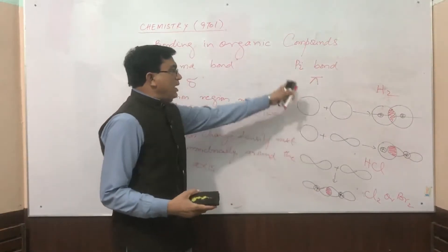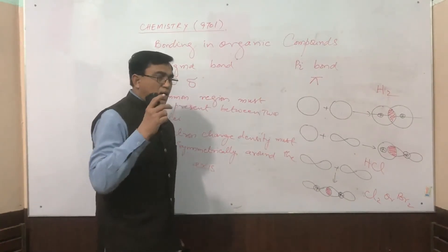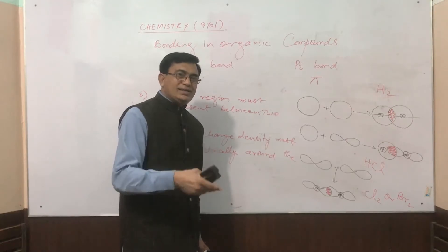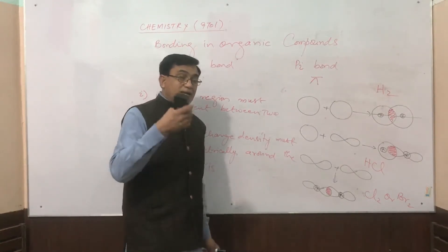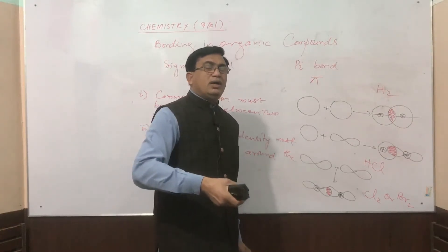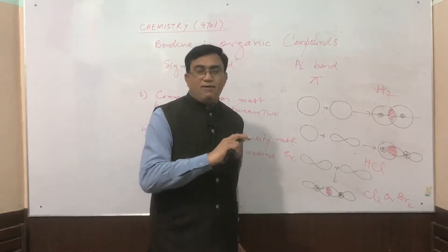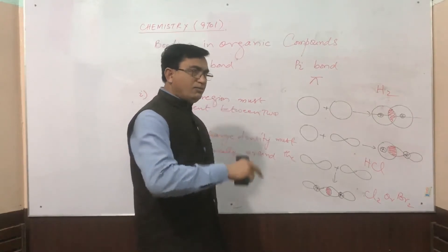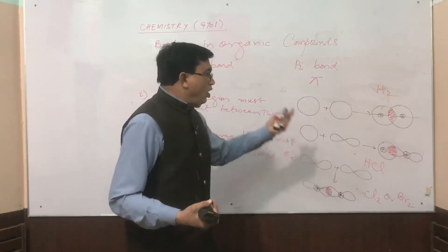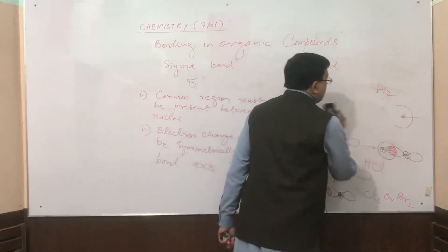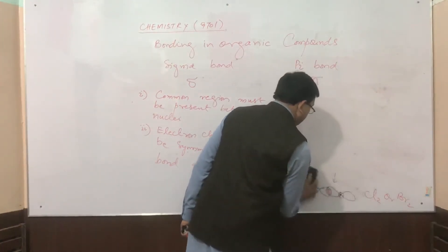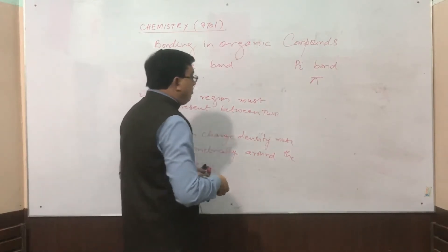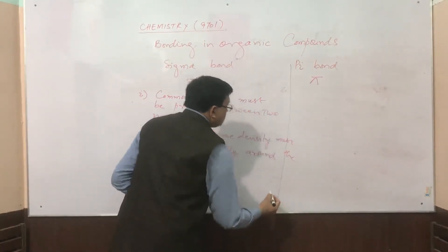Now, how does the pi bond form? A pi bond is always formed when a sigma bond is already established. It never happens that a pi bond forms first — that will never take place. Always, first the sigma bond is formed between two atoms, and then afterwards the pi bond forms. The conditions for the pi bond are opposite to those of the sigma bond.